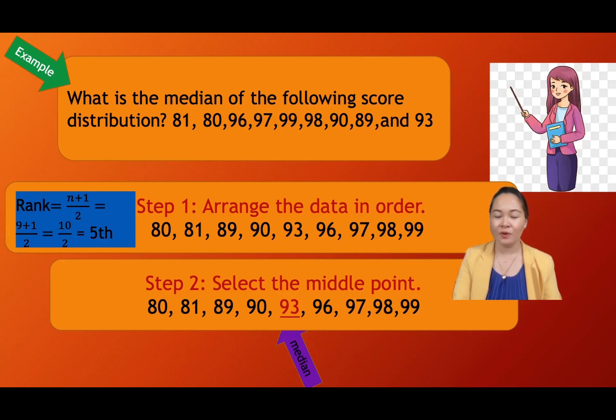You're going to find the fifth rank. It must be in order. So the fifth is 93. Therefore, the middle score is 93, and that is the median. That is an example for an odd number of data set.